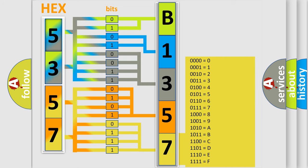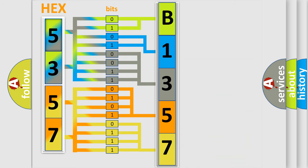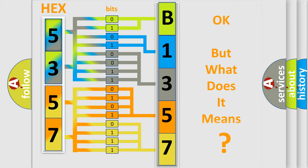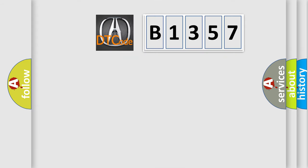A single byte conceals 256 possible combinations. We now know in what way the diagnostic tool translates the received information into a more comprehensible format. The number itself does not make sense to us if we cannot assign information about what it actually expresses.